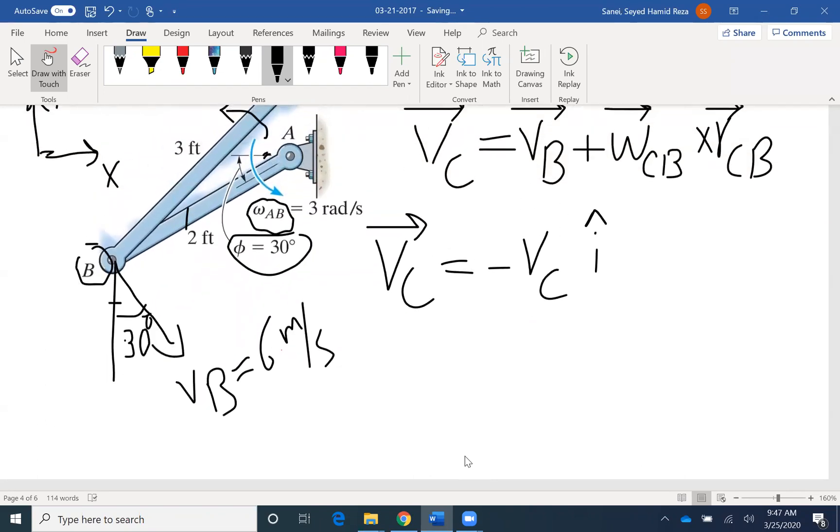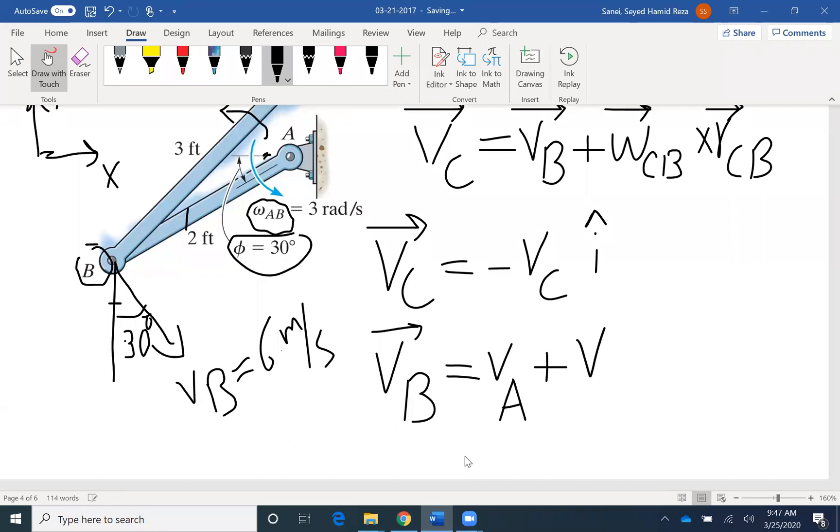Also, we can say that VB is VA, which is 0, plus VB over A. VA is 0, VB is omega AB. That's a vector formulation to find velocity of B.